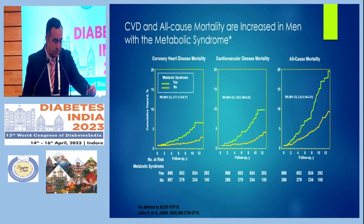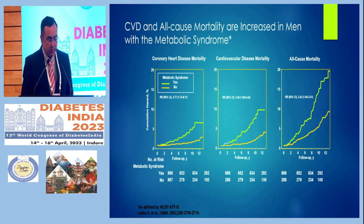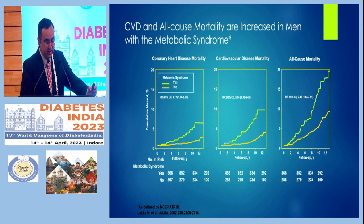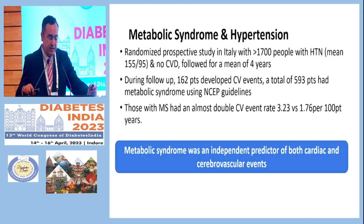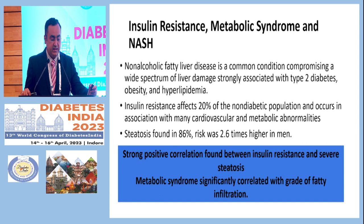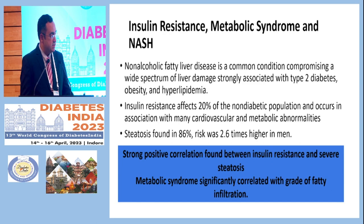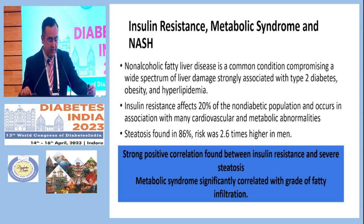In Metabolic Syndrome patients, cardiovascular disease and all-cause mortalities are increased in both men and women. Coronary artery disease mortality and all-cause mortality are elevated. Even in hypertension, Metabolic Syndrome was an independent predictor for both cardiac and cerebrovascular disease. Additionally, there is a strong positive correlation between insulin resistance and severe steatosis, and Metabolic Syndrome frequently correlates with the grade of fatty liver infiltration — the higher the Metabolic Syndrome parameters, the higher the fatty infiltration.